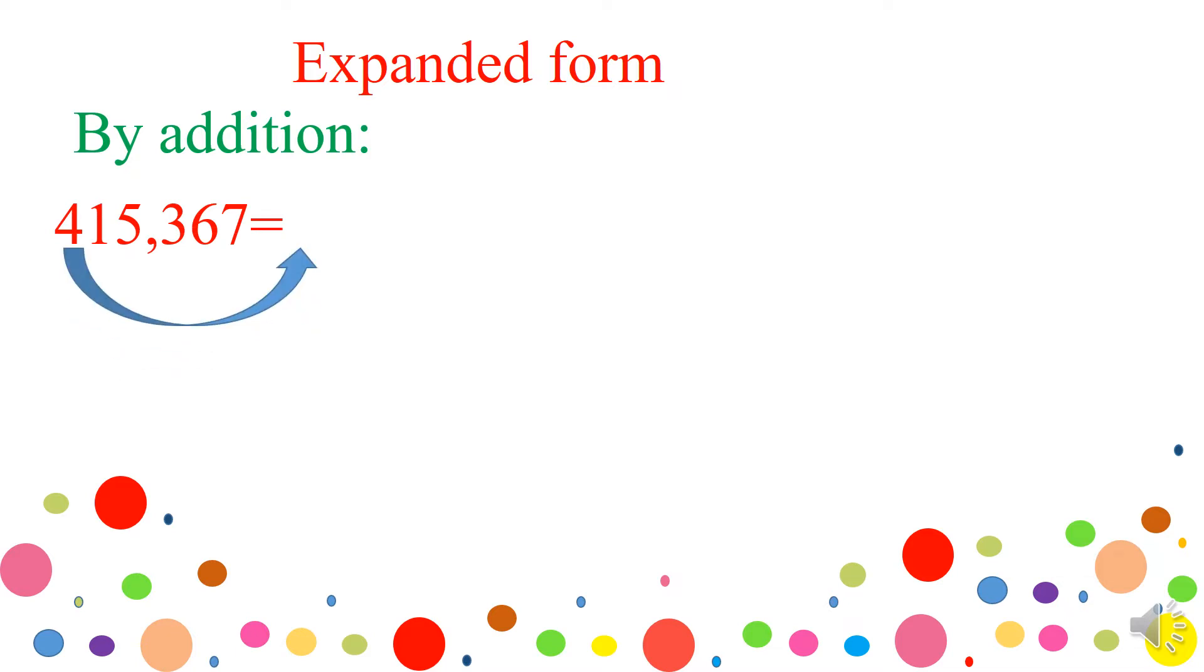First, we have to take the four. Then, I will count how many digits after the four do you have? Five digits. Then, we have to write five zeros. Plus, what do you have after the four? One.